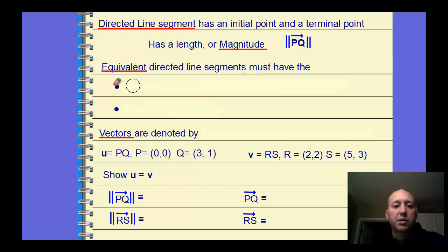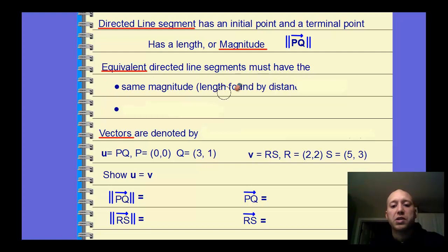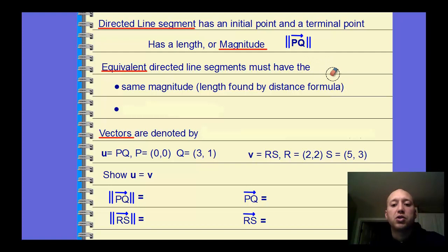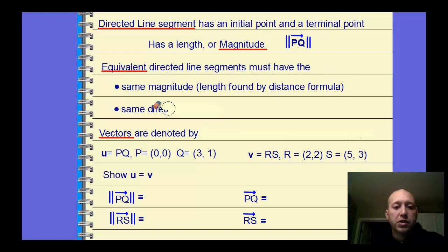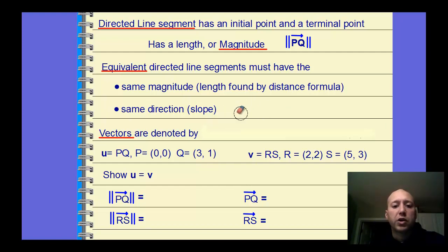Equivalent directed line segments: two line segments are the same if they have the same magnitude. To find the magnitude, it's just using the distance formula — how long is the distance — and then the same direction, which is like the slope. Later on we'll find the direction using some of our trig.